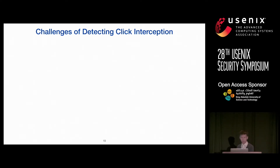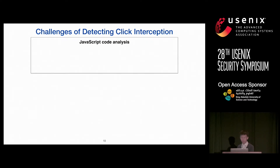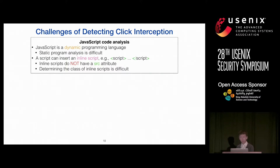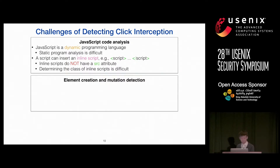We are interested in understanding the behavior of JavaScript, but analyzing JavaScript code is a very difficult problem because it's a dynamic language. Some scripts can be inserted as inline scripts without an href attribute, making it difficult to determine whether a script is truly first-party or third-party. We also need to monitor the creation and mutation of elements such as hyperlinks and script tags, but JavaScript itself is unable to tell which script originally created a particular element.